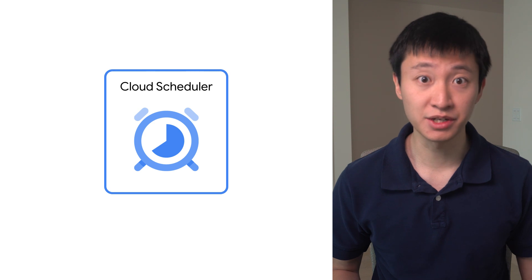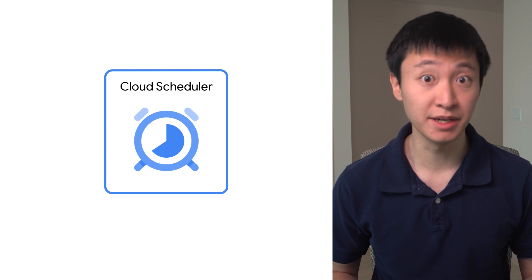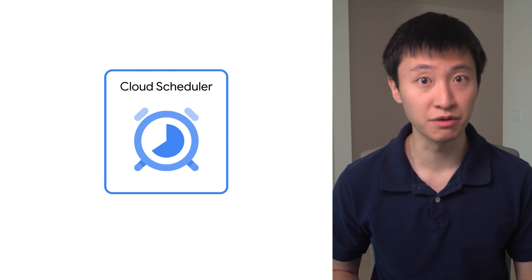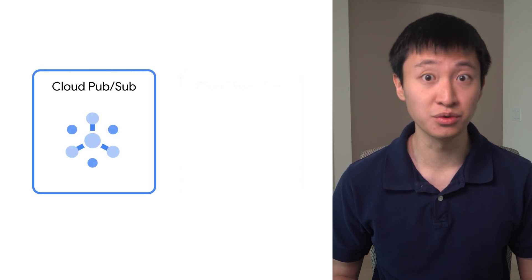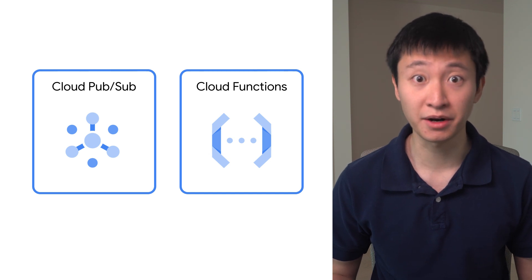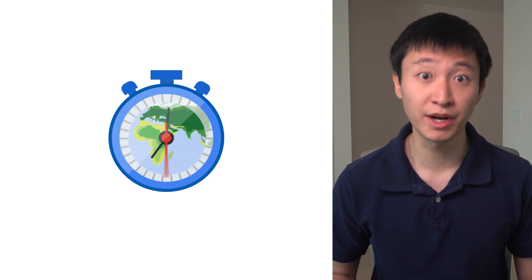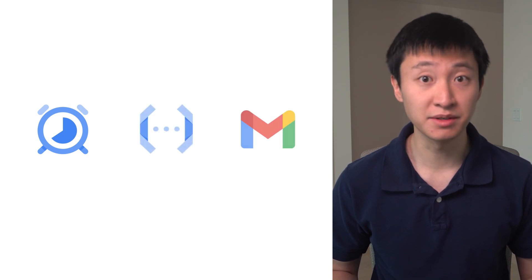First, we have Cloud Scheduler. Cloud Scheduler is a simple scheduling tool that allows you to schedule the execution of a single HTTP-based service on a recurring schedule you define. Many customers use Scheduler alongside other Google Cloud tools like PubSub and Cloud Functions to execute their code in a serverless manner. Cloud Scheduler is great if you need to call a single service at regular intervals. For example, you could use Cloud Scheduler to schedule the execution of a Cloud Function that sends out daily emails with top news stories about technology.